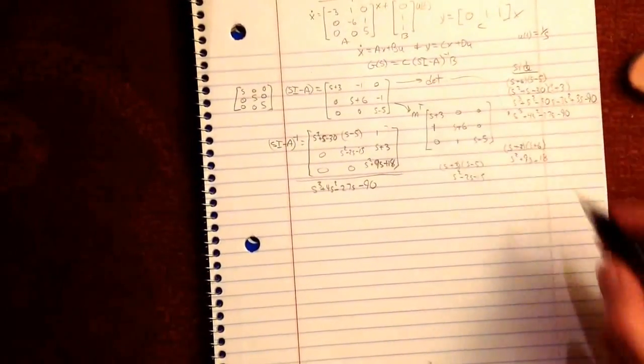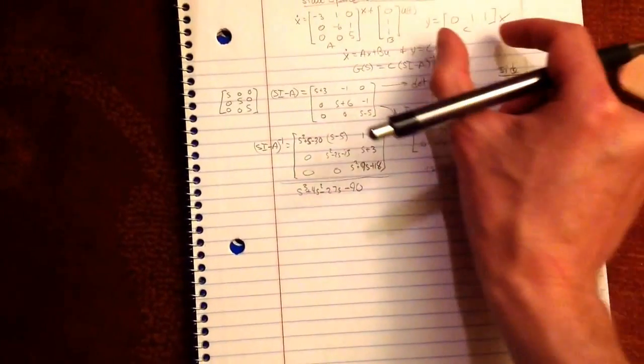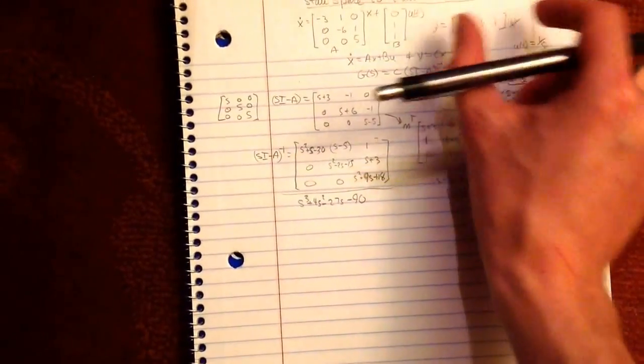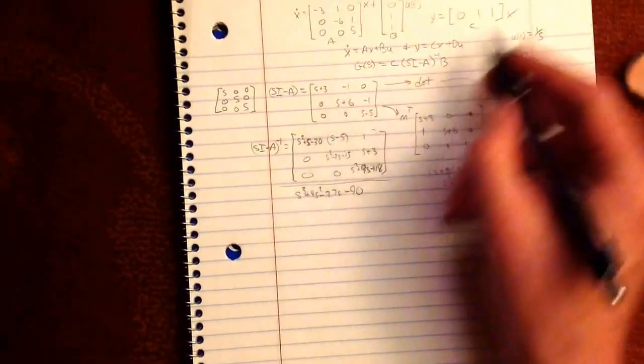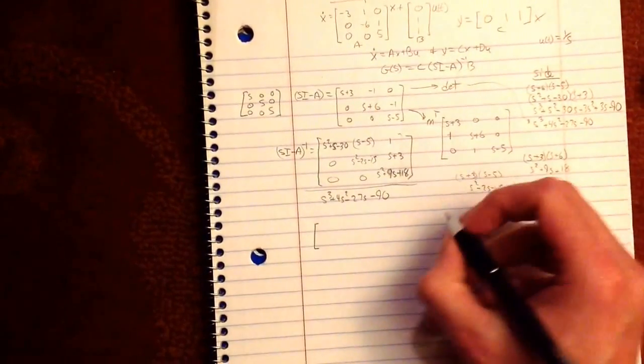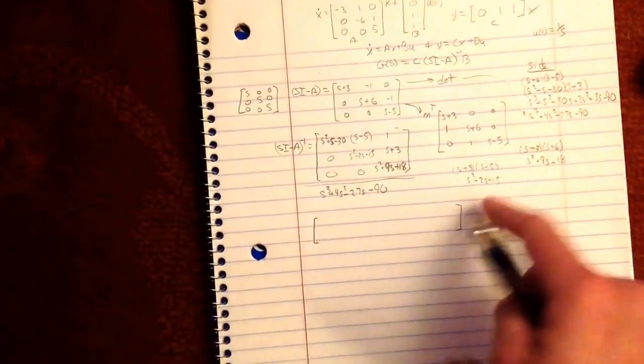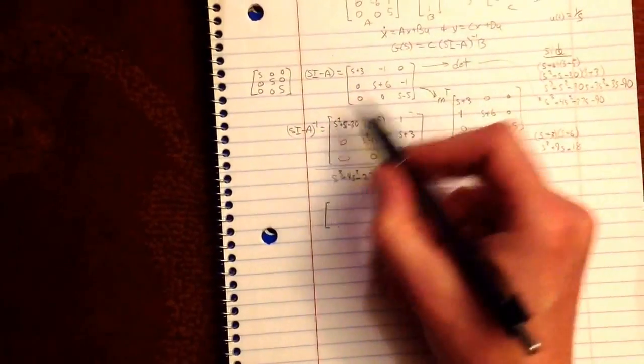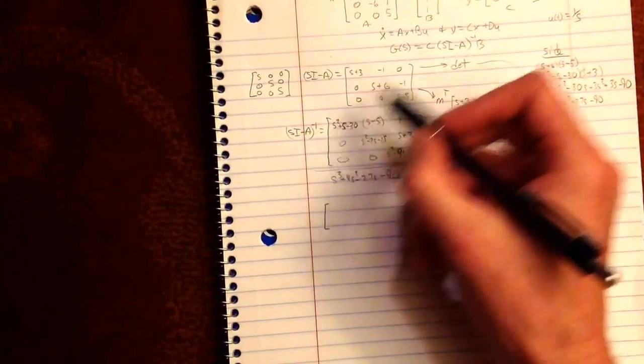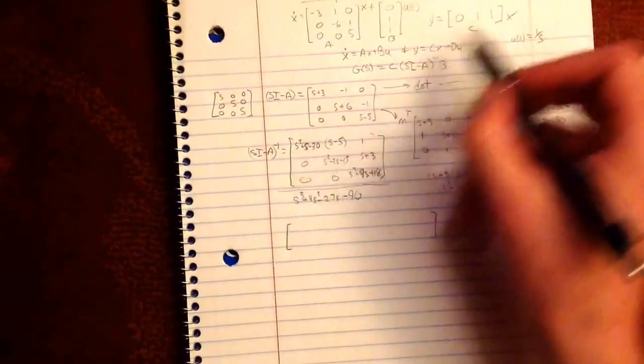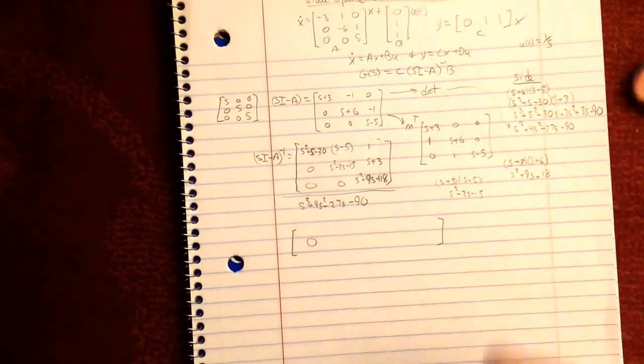C is this. Okay, so remember your multiplication. You're going to take this. You're going to end up with something that looks like this. So you take 0 times that, plus 1 times that, plus 1 times that. 0. That's easy.